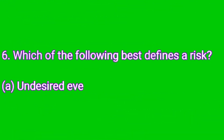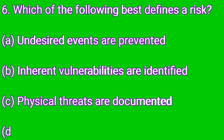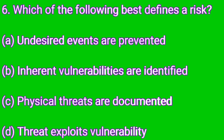Question number six: which of the following is best defined as risk? Option A: Undesired events are prevented. Option B: Inherent vulnerabilities are identified. Option C: Physical threats are documented. Option D: Threat exploits vulnerability. The right answer is D — Threat exploits vulnerability.